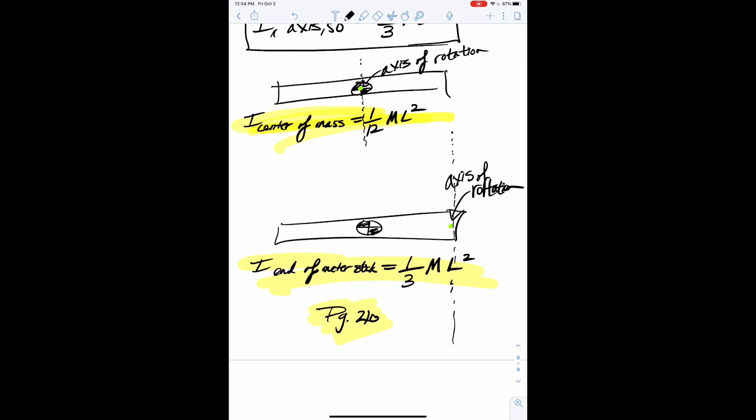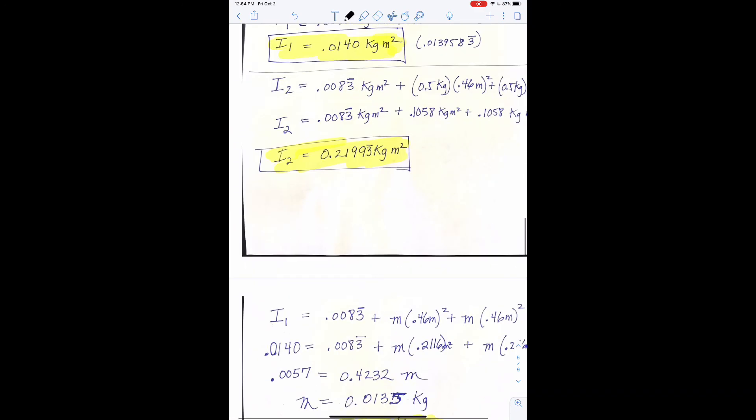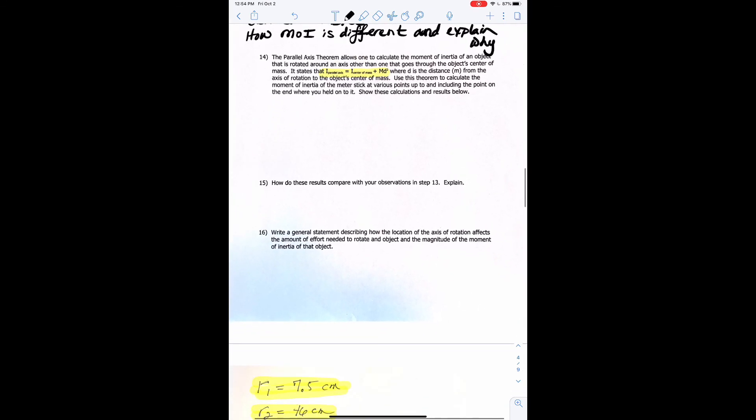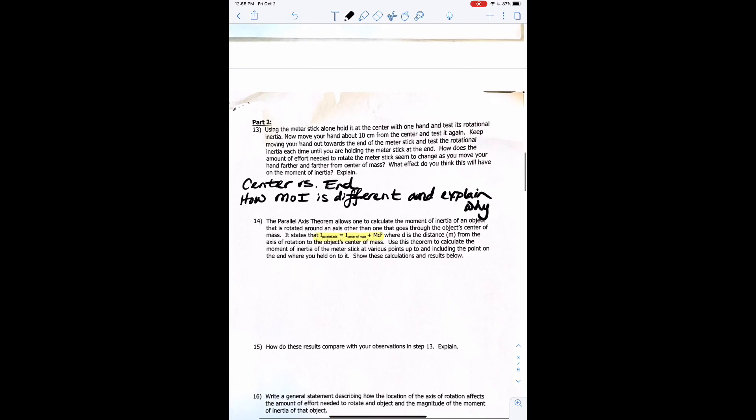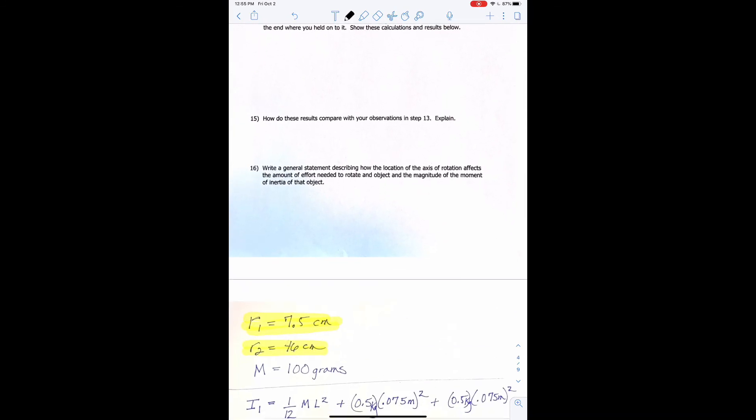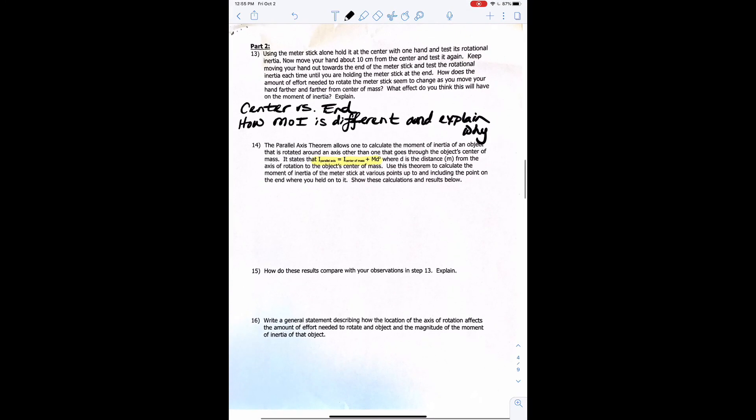So let's go back to the lab. All right, and I'll let you – for show these calculations and results below, we just did that. So I like the way I did it because I didn't have to use numbers. I think when the students use exact numbers, like 100 grams for the mass of the meter stick, that they lose the concepts. And so it's way better to understand it, to work with variables. All right, number 15, how do these results compare with your observations in step 13? All right, so I'll let you do that. Number 16, write a general statement describing how location and axis of rotation affects the amount of effort needed to rotate the object in the magnitude of the moment of inertia. All right, you got that one too. All right, hopefully this helped. Have a good weekend.